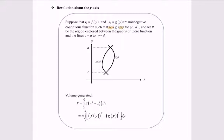So here we have the functions f(y) and g(y), and here will be the region for the limit c to d. The volume generated will be: v equals pi times the integral of x sub 1 squared minus x sub 2 squared with respect to y, for the limit c to d. This equals pi multiplied by the integral of f(y) squared minus g(y) squared with respect to y, for the limit c to d.